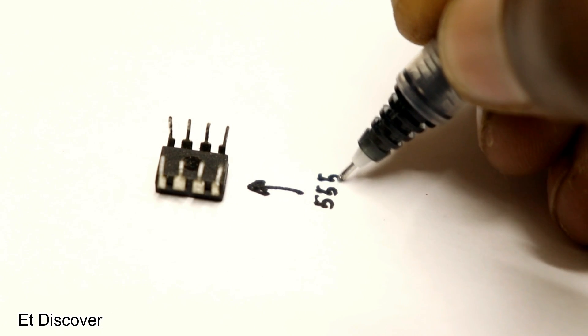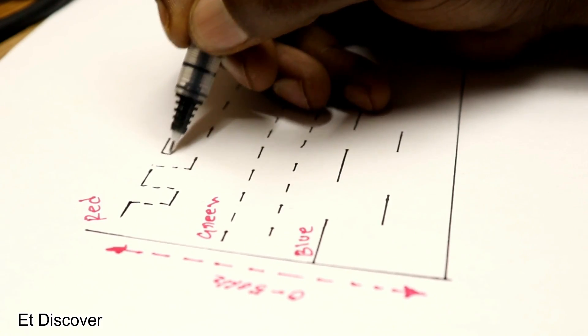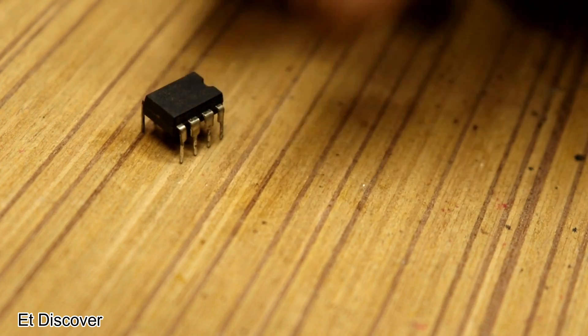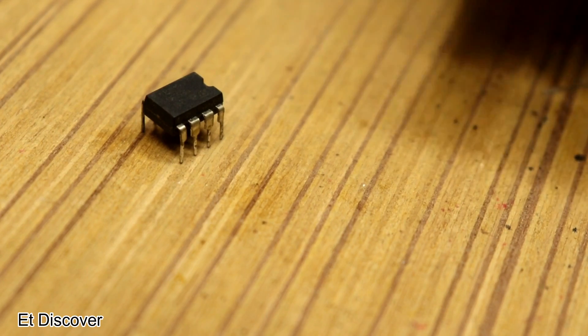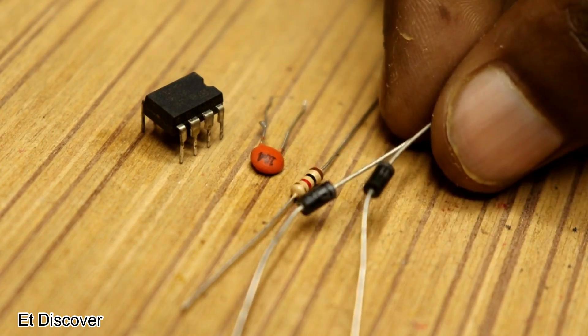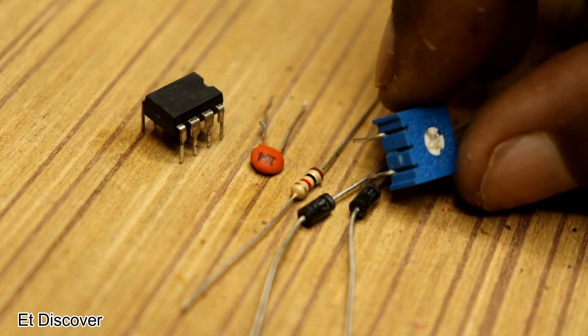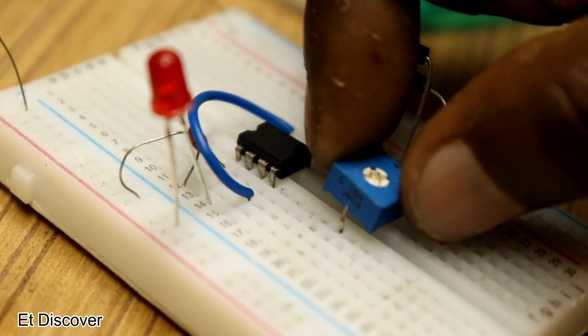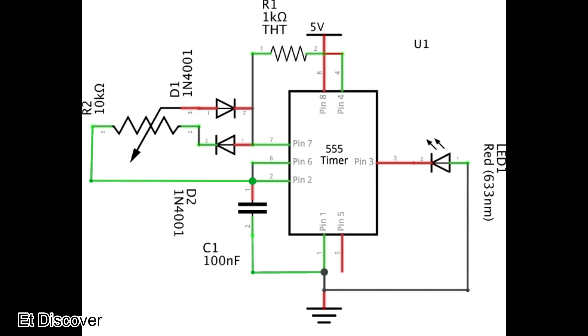The 555 IC can produce a 0 to 50 Hz signal. For this I need a 555 IC, 100nF capacitor, 1K resistor, two 4007 diodes, and one 10K preset. I mounted all components on the breadboard as per my diagram.